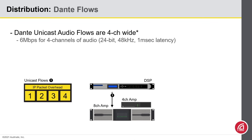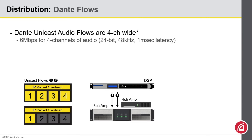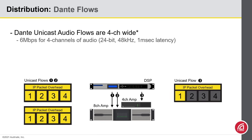Now once I get to the fifth channel, we're out of space, so we'll establish another four-channel stream with one channel in it. And if you keep going, you'll fill up the unused channels in that stream as well. When I want to transmit to the second amplifier, I have to create another flow. When I make my first subscription, the device establishes a four-channel flow. The first channel is populated, the rest are blank. And as I create the other subscriptions, they fill in the unused slots.